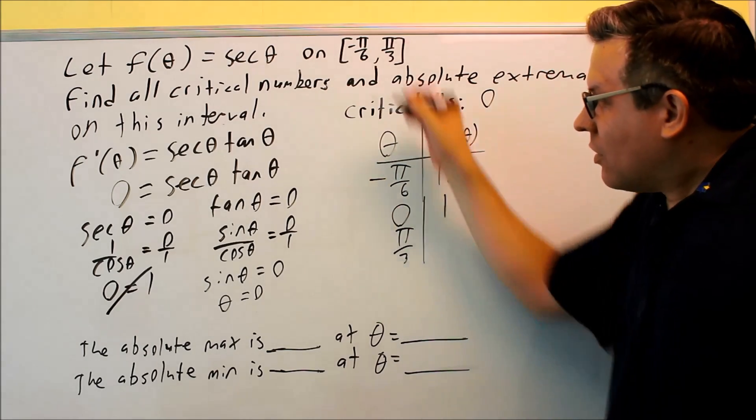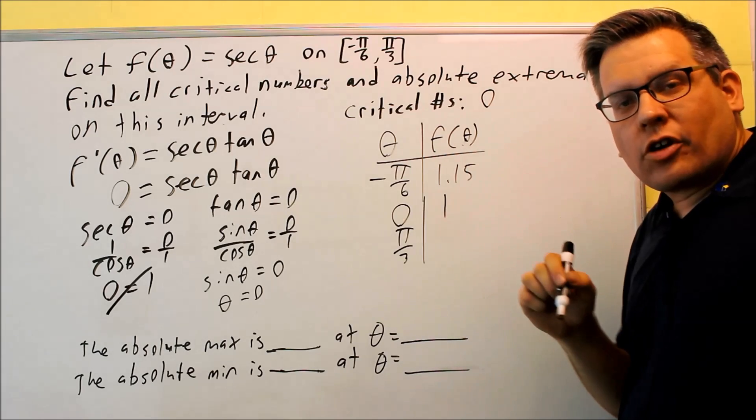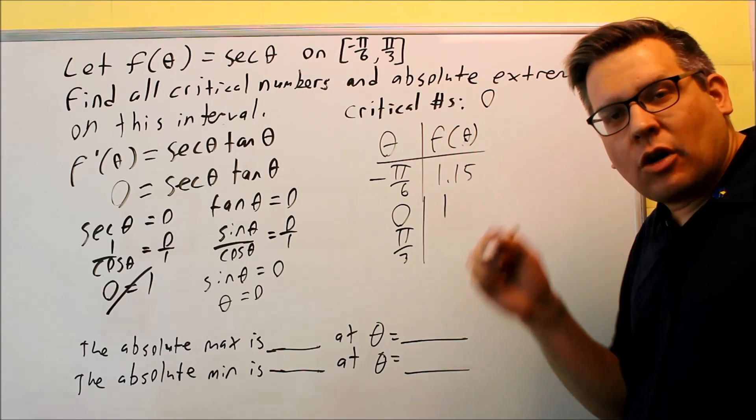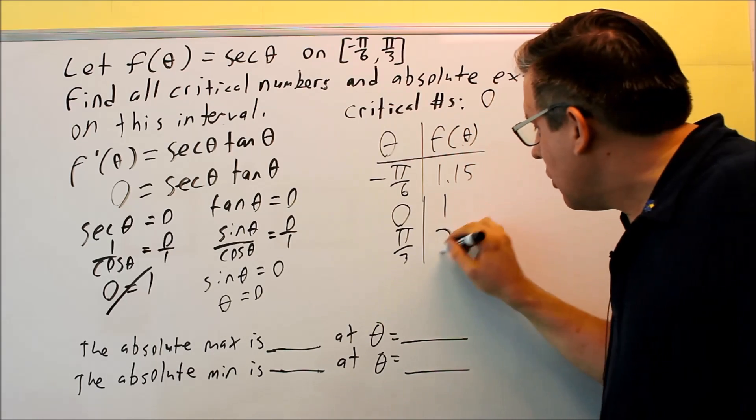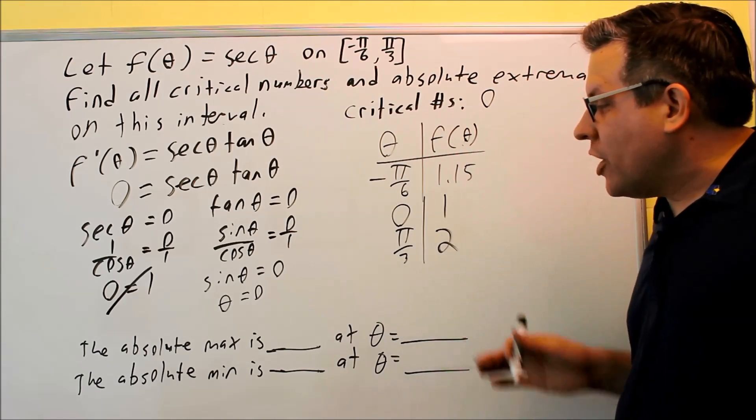Then we're going to do pi over three. If I put that in there, that's one over cosine pi over three, and cosine pi over three is one-half. So if you do one over a half, you're going to get two. So now we have our table complete.